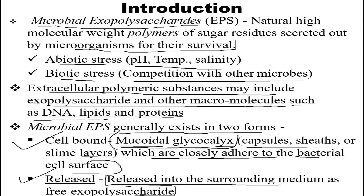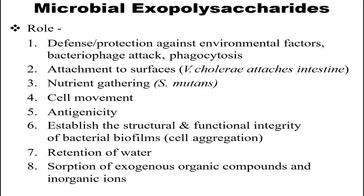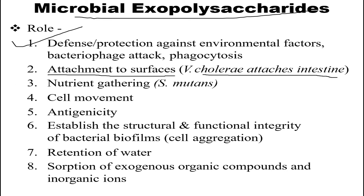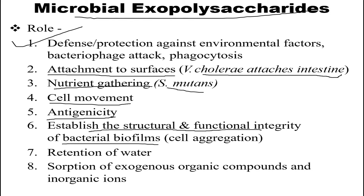Moving on to the roles of microbial exopolysaccharides: they have roles in defense and protection against environmental factors, phage attack, and phagocytosis. They are involved in attachment to surfaces — for example, S. mutans attaches to the intestine — and in nutrient gathering. They also play roles in cell movement, antigenicity, and establishing the structural and functional integrity of bacterial biofilms and cell aggregation, as well as water retention and sorption of exogenous organic matter and organic/inorganic ions.